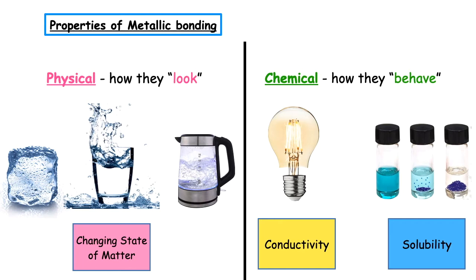We then focus on the chemical properties. That's how an element or a compound behaves. The two experiments that we can do to identify how that substance behaves is looking at conductivity and looking at solubility.